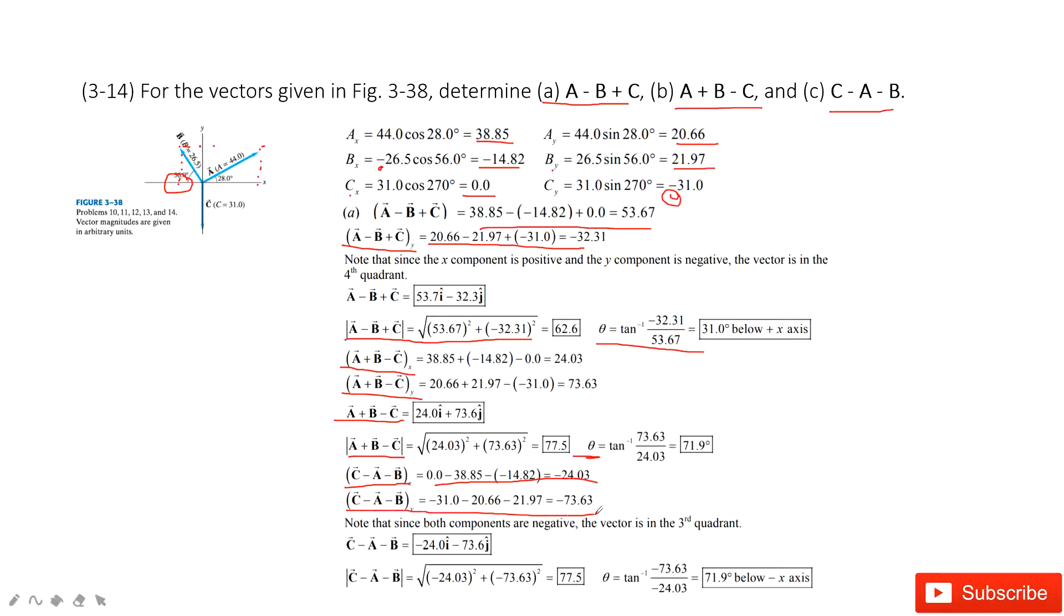We get two components for this vector in i component, j component. We can get the magnitude and angle theta by using the i component square plus j component square squared. I mean, the theta is arctangent vy divided by vx. Thank you.